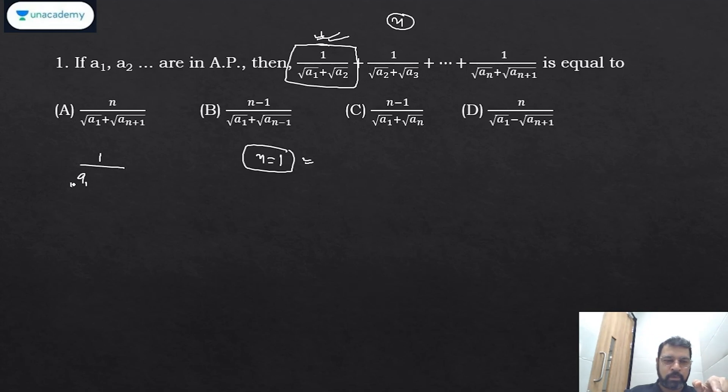So this could be my answer. We need to check others also. This gives you zero because n minus 1 is there. This also gives you zero and this gives you minus, so 1/(√a1 - √a2). So this is also ruled out.